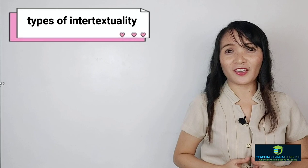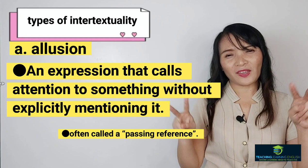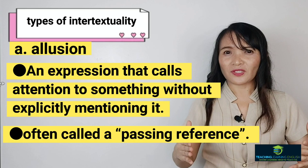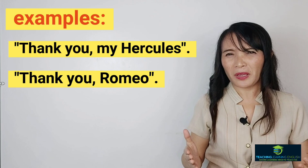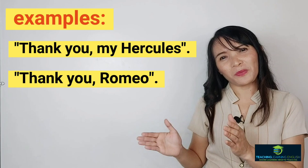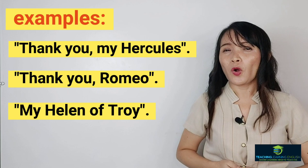There are many different types of intertextuality, all of which refer to texts in different ways to produce and shape meaning. The first type is allusion. It is an expression that calls attention to something without explicitly mentioning it — often called a passing reference. It is a figure of speech that references a place, thing, or event. For example, when you say to your boyfriend, 'Thank you, my Hercules,' or 'Thank you, Romeo' — his name is not Romeo, but you call him Romeo because you associate it with the Romeo and Juliet story. You say, 'Here comes my girlfriend, my Helen of Troy.' But you will never appreciate these expressions if you don't know the stories.